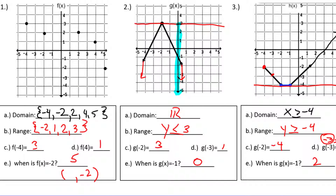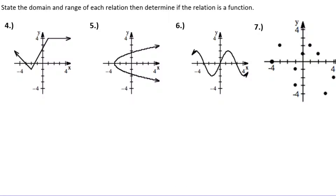So we should be able to look at a graph and know domain, range, inputs, and outputs using function notation. Problems 4 through 7 are very similar, but they use full graphs just stating domain and range. Let's quickly move through these so we can talk about some other types of problems.